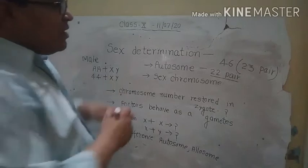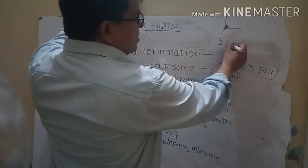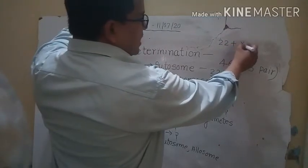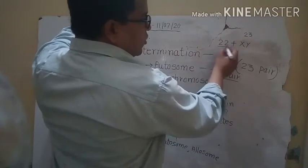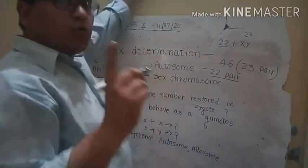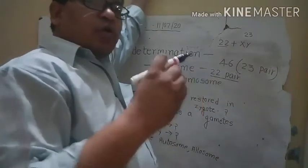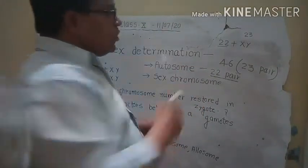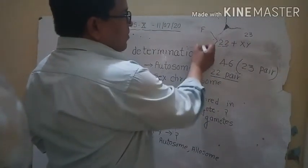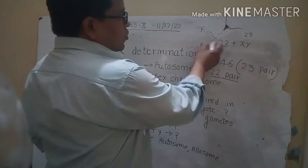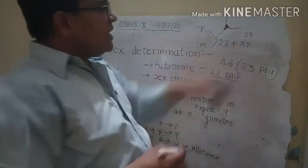In any body, there are 22 pairs plus either XY or XX as the 23rd pair. The 22 pairs from pair 1 to pair 22 are common in both male and female. Whether male or female, these 22 pairs remain common in both.